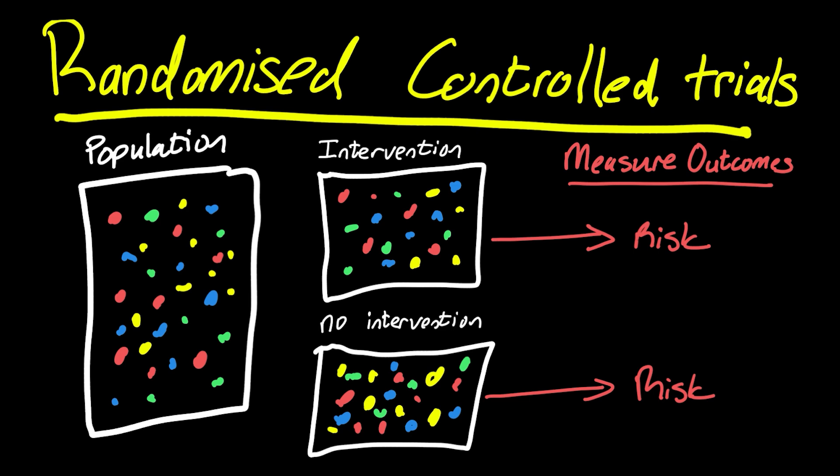Randomized control trials mean that confounding variables are controlled for. And what do I mean by that? Let's take a quick step back and better understand what we mean by confounding. Confounding is when there is an alternative explanation for a correlation that we see between an exposure and an outcome.